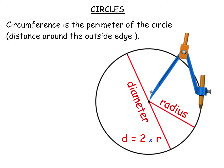There is a relationship between the diameter of the circle and the circumference. The diameter is the line from one point on the circumference to the opposite side, going through the centre. From that, we can also get a relationship between the area of the circle, and we will use the radius for that. The radius is from the centre to the circumference — half the diameter.